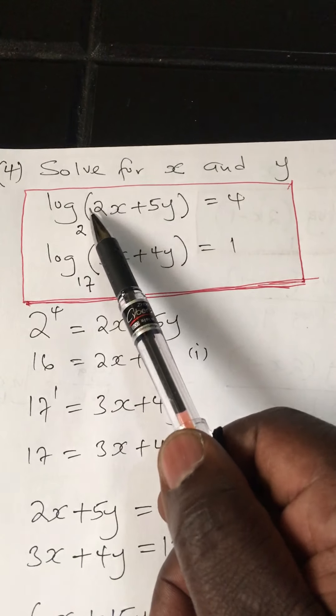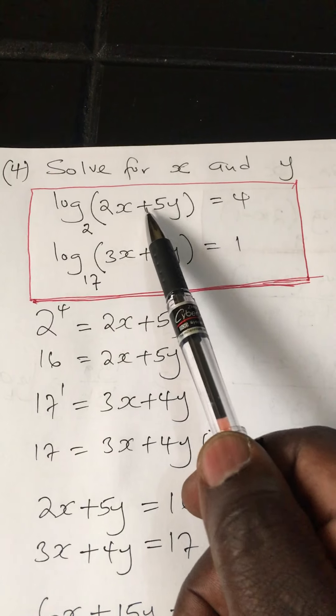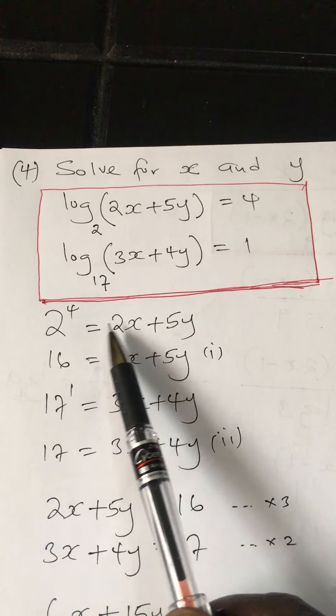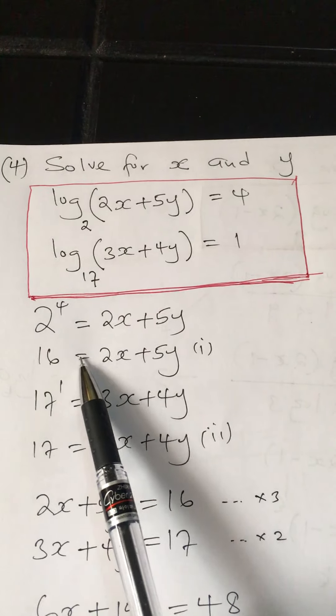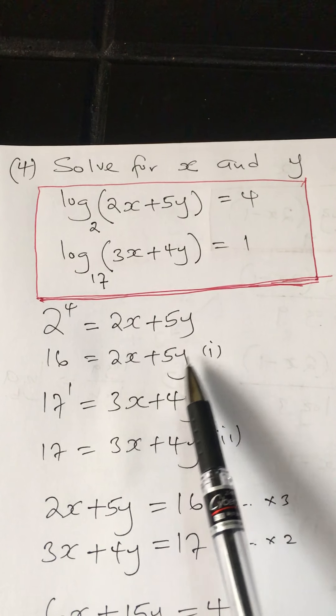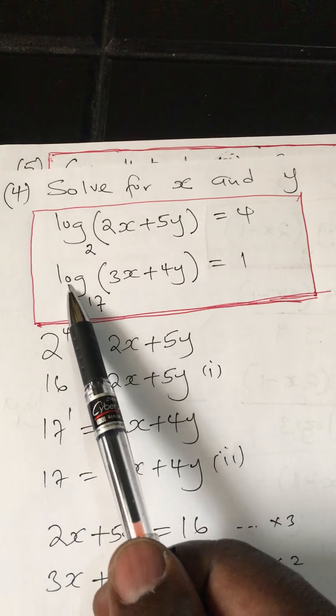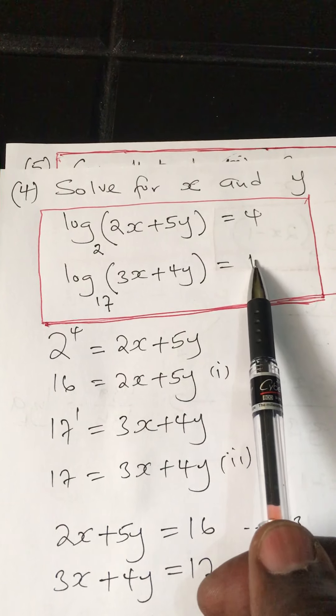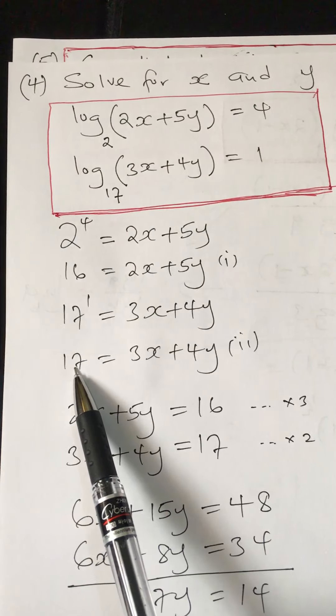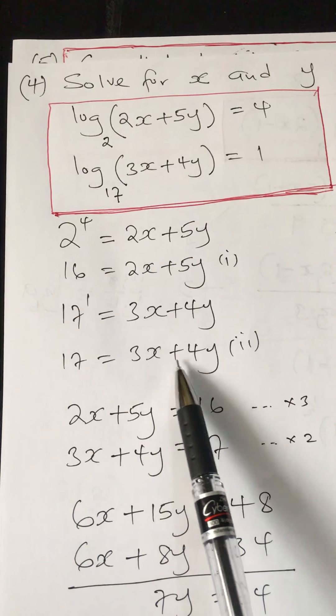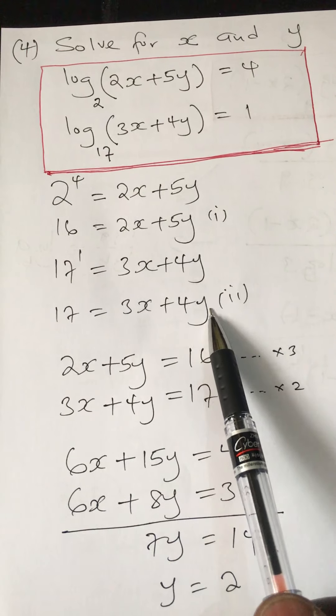This question takes you to the idea of changing logs to indices and vice versa. I can rewrite this from logs to indices - you say a number raised to this equals that. So 2 raised to 4 equals 2x plus 5y. 2 raised to 4 is the same as 16 equals 2x plus 5y. That's my first equation. The next one, 17 raised to 1 equals 3x plus 4y, which simplifies to 17 equals 3x plus 4y. That's my second equation.